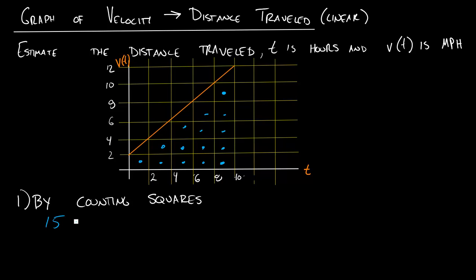So 15 full. Then I have these little pieces here. I got a little bit lucky—each of these pieces looks like they're about a half square. So I can count those up: 1, 2, 3, 4, 5 half squares.